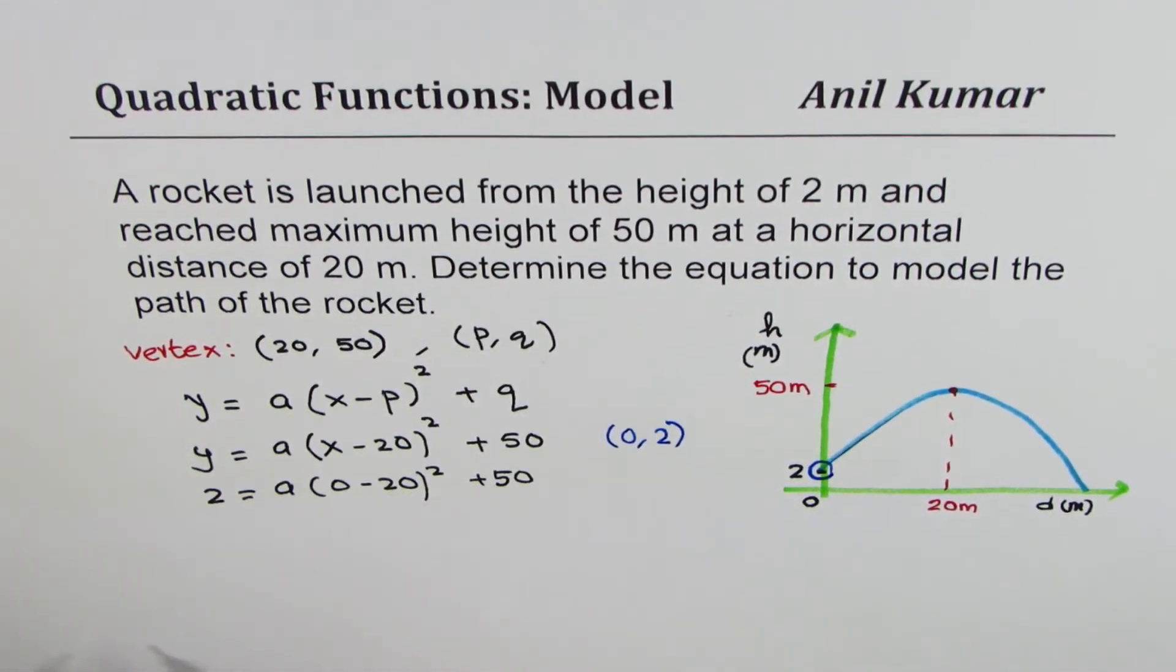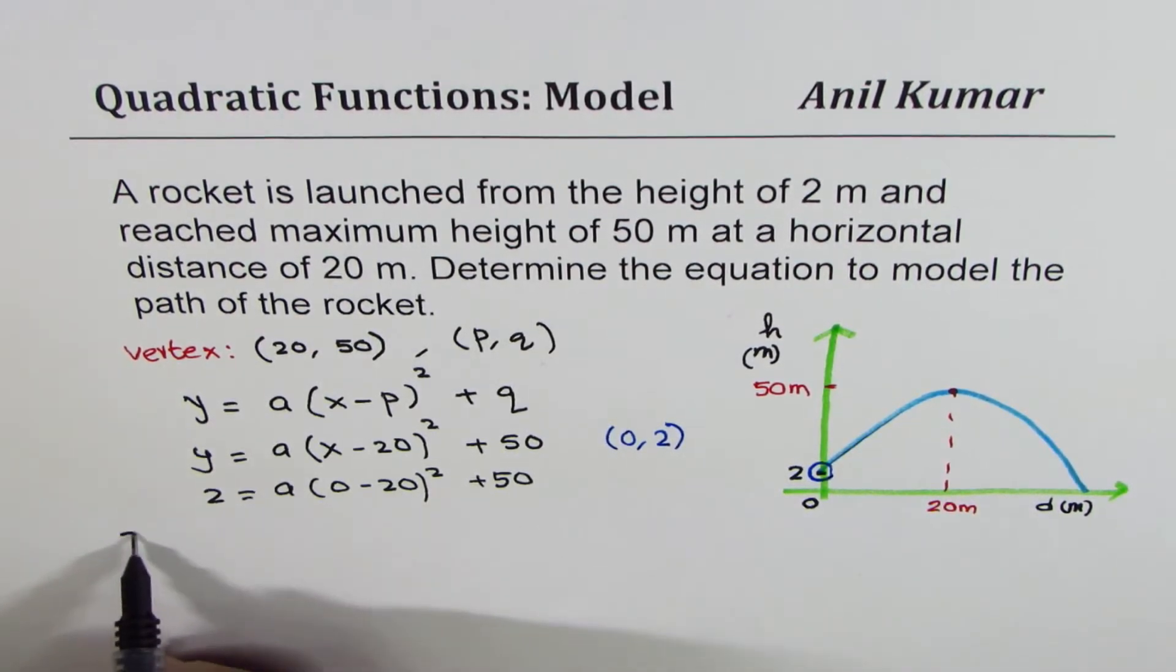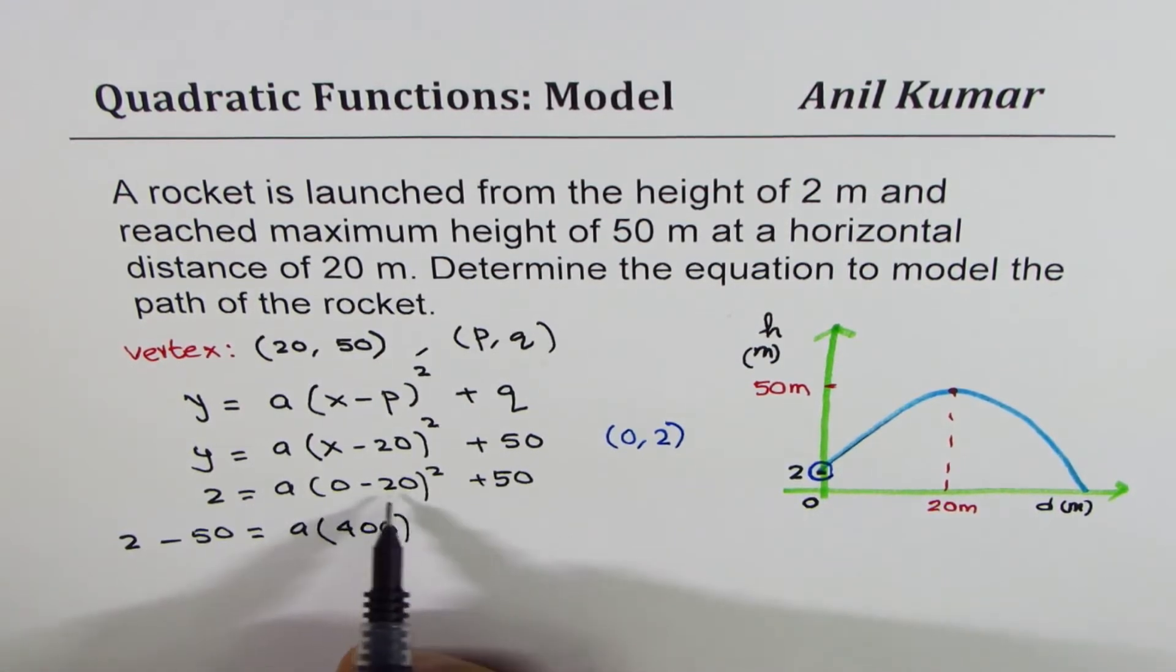How do we solve this equation? We have to take away 50 from 2 and then divide by 400. Let's rearrange. So we have 2 minus 50 equals to a times 400. Or this is minus 48 equals to 400a.